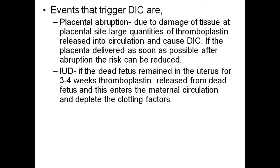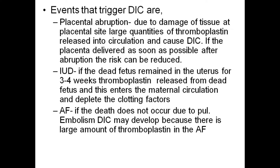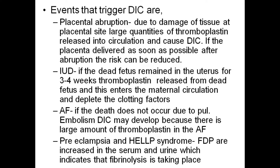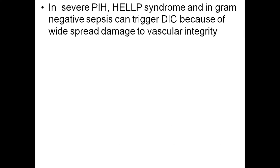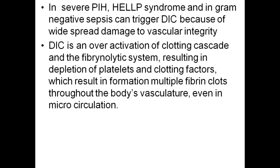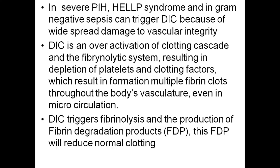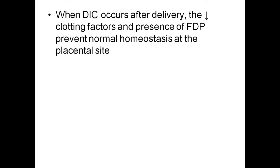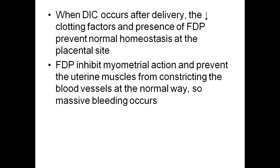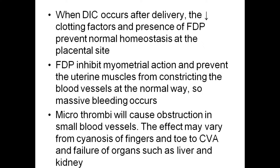DIC begins with an event which triggers widespread clotting with the formation of microthrombi throughout the circulation. DIC triggers fibrinolysis and production of fibrin degradation products. These fibrin degradation products reduce the efficiency of normal clotting. When DIC occurs during or after delivery, the reduced level of clotting factors and the presence of fibrin degradation products prevent normal hemostasis at the placental site. The fibrin degradation products inhibit myometrial action and prevent the uterine muscle from constricting the blood vessels in the normal way, and torrential bleeding may be the outcome. Visible blood loss may be observed to remain uncoagulated for several minutes, and even when clotting does occur, the clot is unstable.